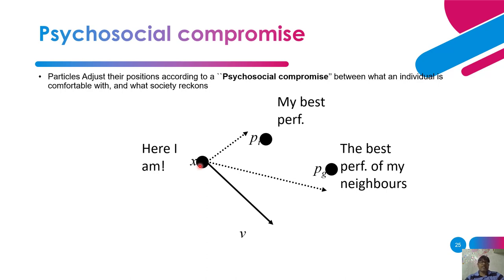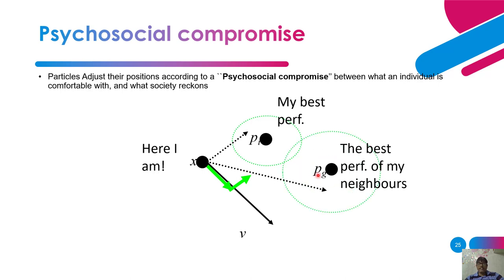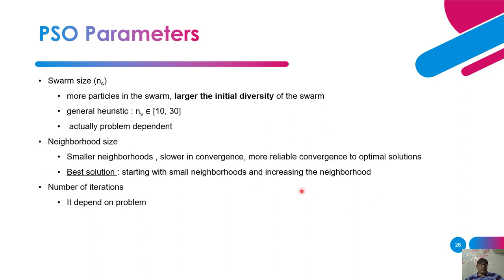A particle adjusts its position according to a psychological compromise between what an individual is comfortable with and what a society is comfortable with. The original velocity carries it in one direction (inertia), the local personal best reference changes direction toward its own best, and the social reference — the best position of the neighborhood — adjusts the final direction. The resulting new position is the combination of all three velocity components.